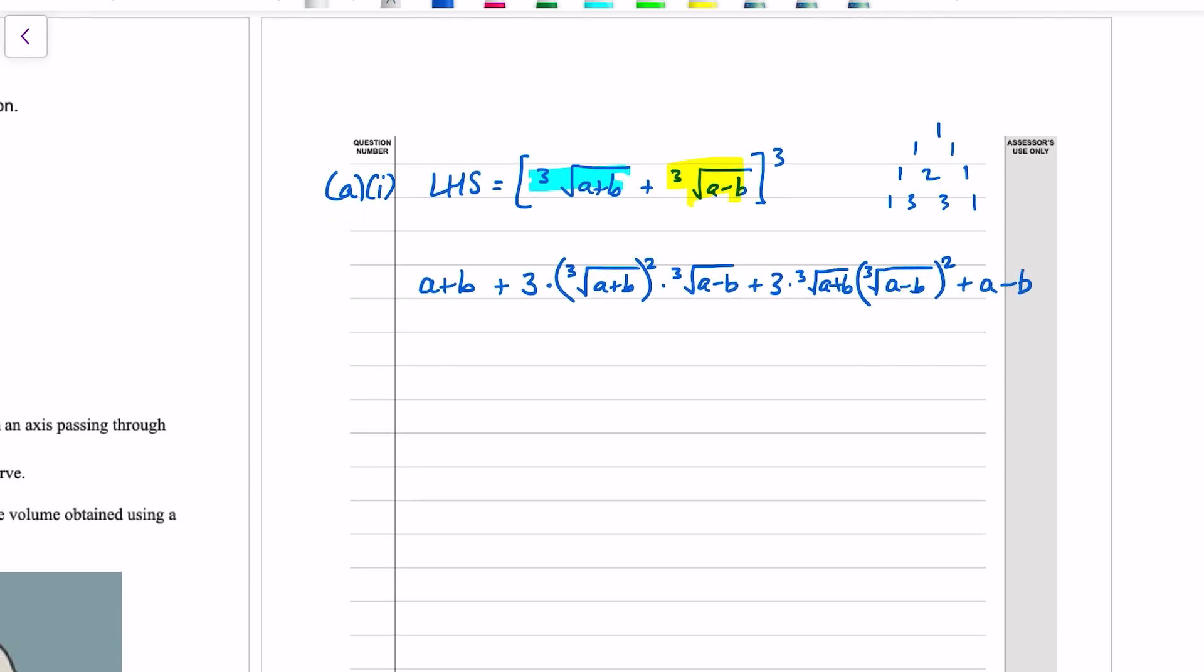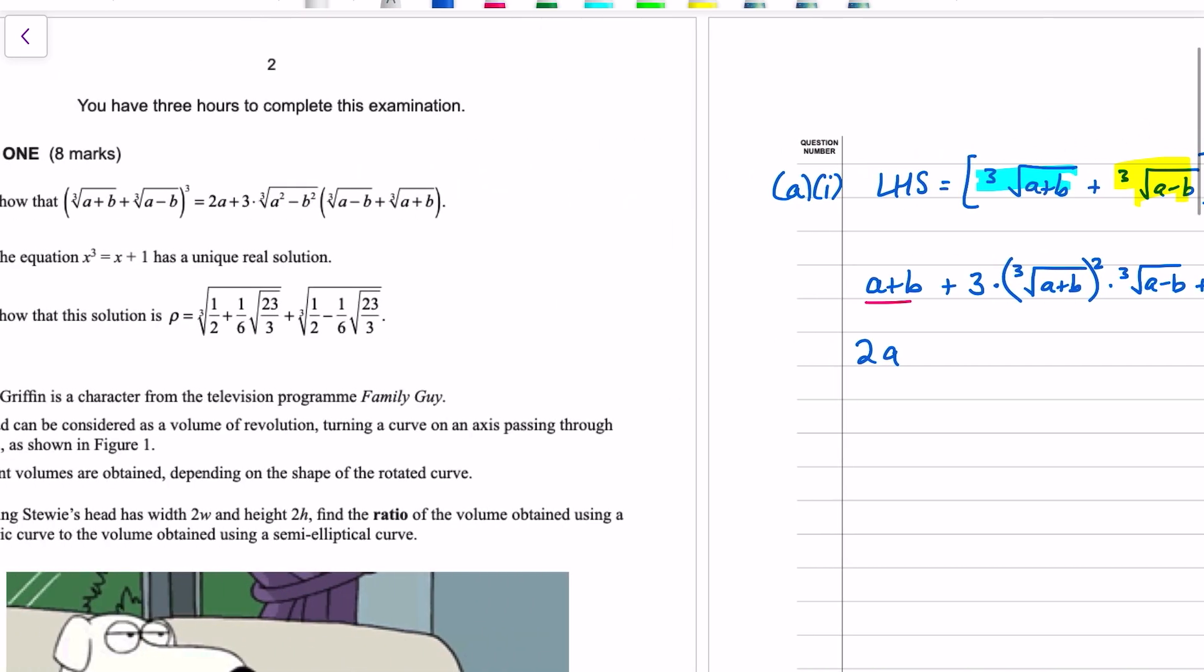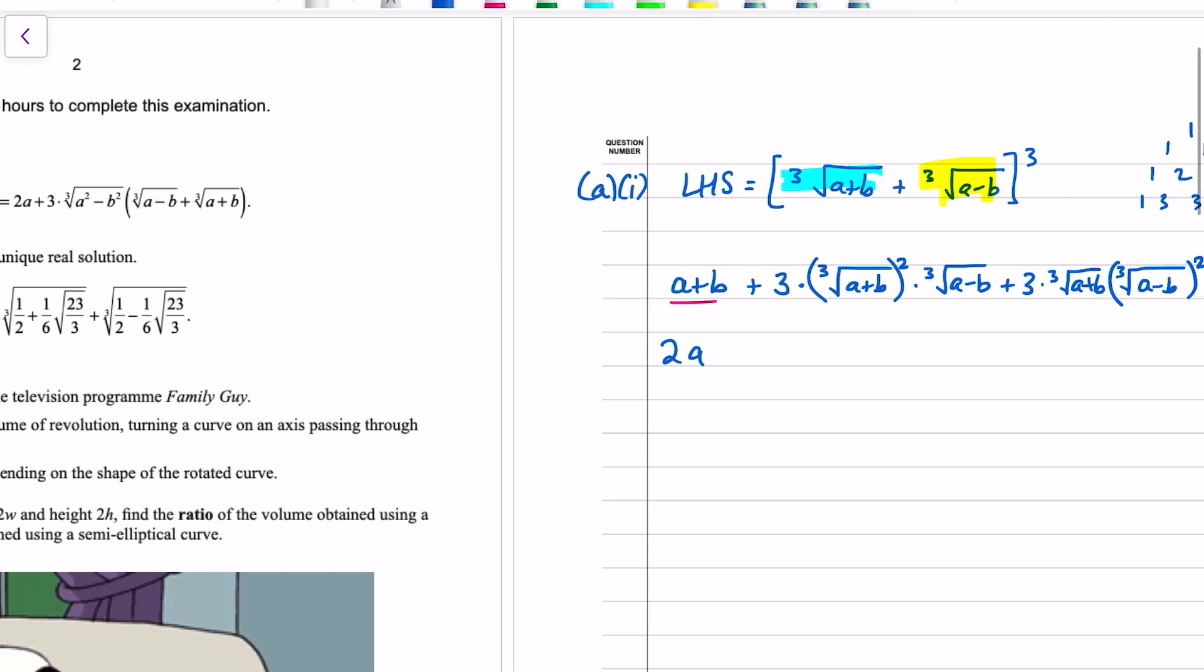Okay, and then we can see the like terms straight away, a plus b and a minus b, we get 2a, which is where we're heading on the right-hand side. We're looking for a 2a. We've got a factor of three. And then we've got a difference of two squares underneath a cube root. Now that's not as obvious to spot.